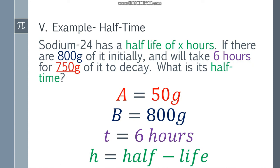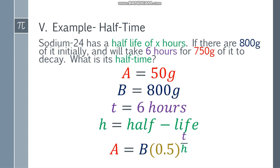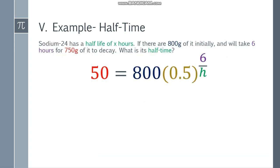Again, yung A natin yung final amount. So yung 750 grams of it to decay. So my final amount mo ay 50 grams. Tricky, right? So you have to be careful. Okay, yung mga given natin. The formula and substitute the values. We have 50 here, is equal to 800 times 0.5 to the 6 over h. Divide both sides by 800. Let's simplify it, 0.0625 and equal na siya dito.